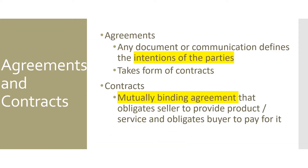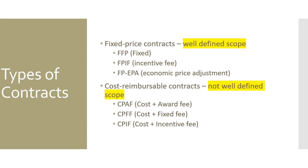The next type of artifact is agreements and contracts. An agreement is any document or communication that defines the intention of the parties — typically a buyer and a seller. Generally it takes the form of a contract, which is a legally binding agreement that obligates the seller to provide the product or service and obligates the buyer to pay for it.